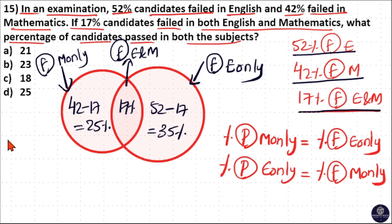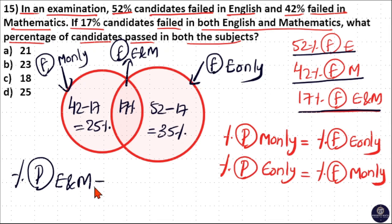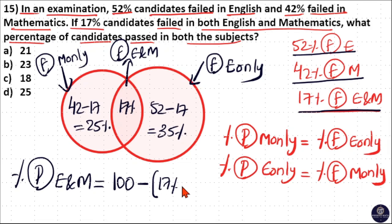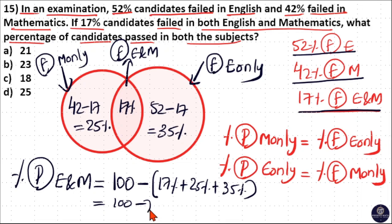The percentage of students who passed both English and Maths equals the total percentage (100%) minus the number of students who failed in one or both subjects. That is 100 minus (17% + 25% + 35%) = 100 minus 77, which equals 23%.